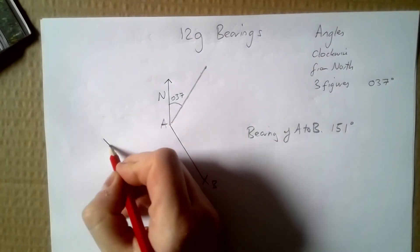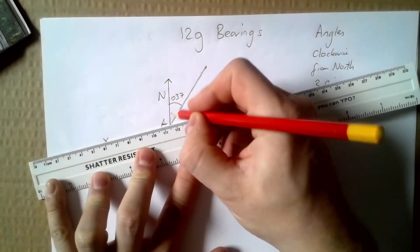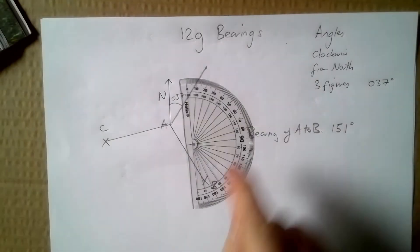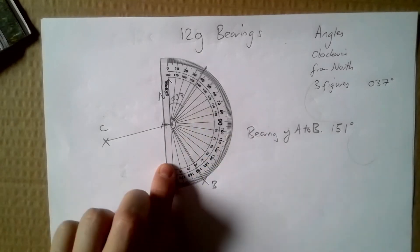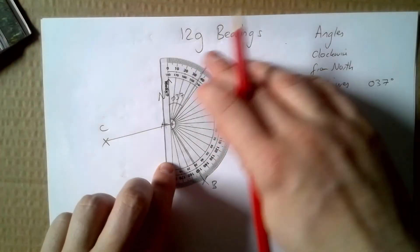If I've got an angle over here, so my point C, then I've got a problem because I can't use my protractor the correct way around. So the bearing is not going to, first off it's not going to be less than 180, and secondly I'm going to have to think of a way to do it.